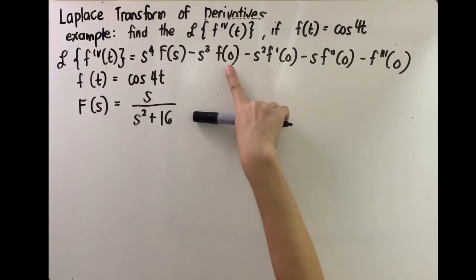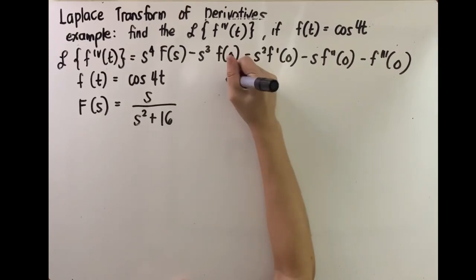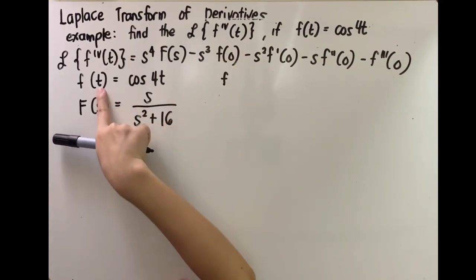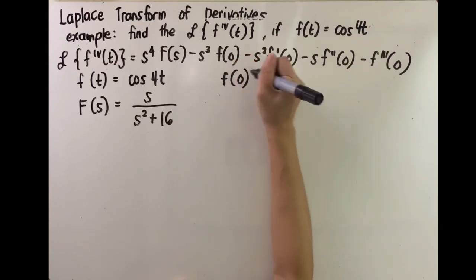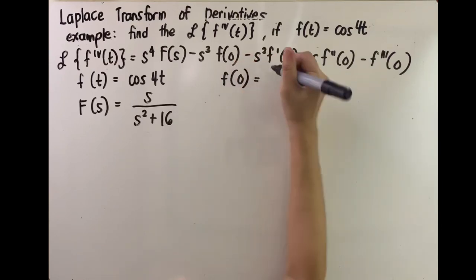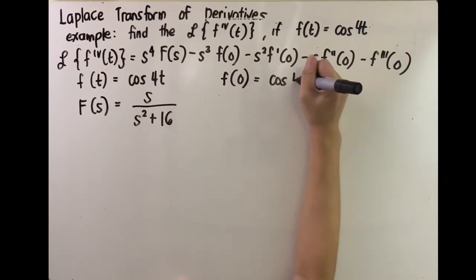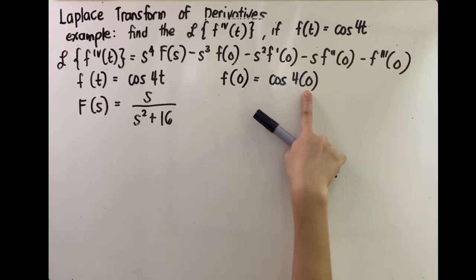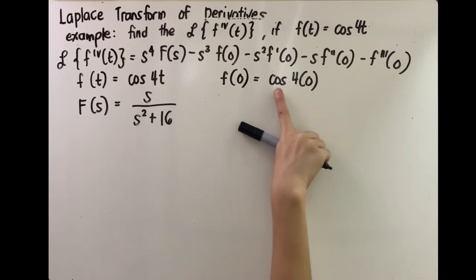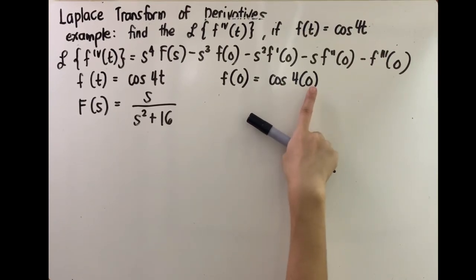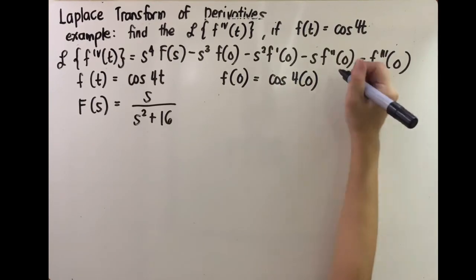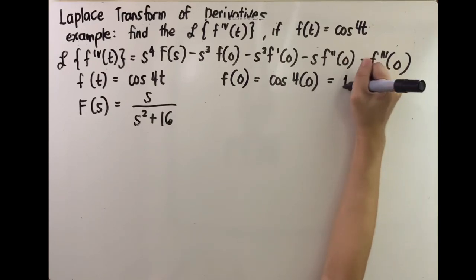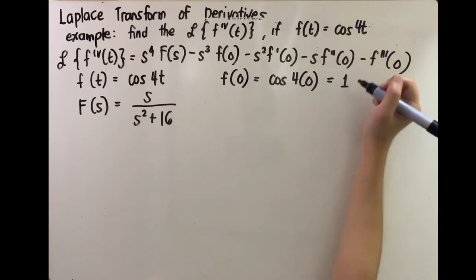We need f of 0: the original function f of t with t replaced by 0. That means cosine of 4 times 0, which is cosine of 0 radians, and that is simply equivalent to 1. So f of 0 equals 1.